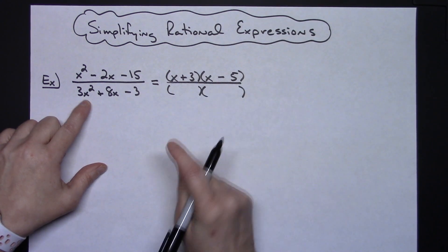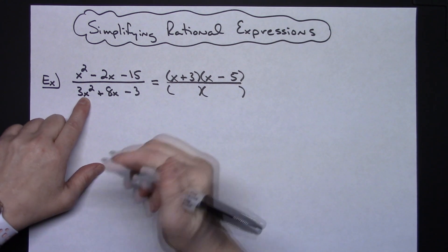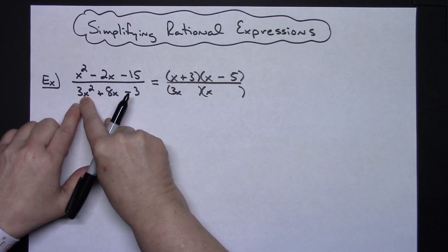So again we'll guess and check. On my 3x squared right there my only options are going to be 3 and 1 so I know I'm going to have a 3x and an x. 3x times x is going to be 3x squared.